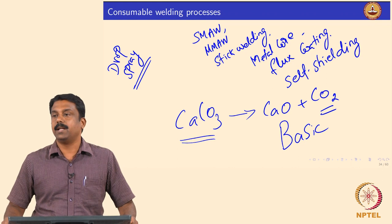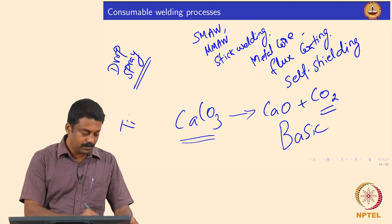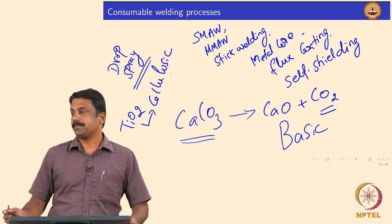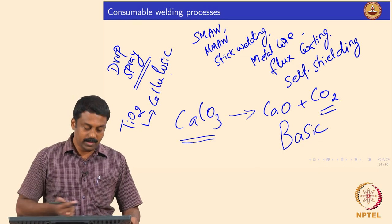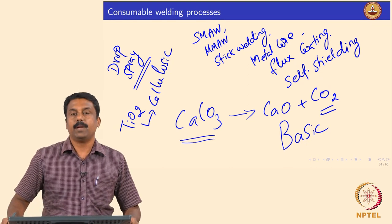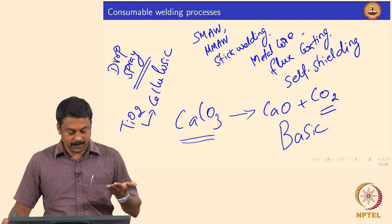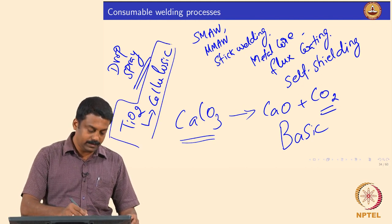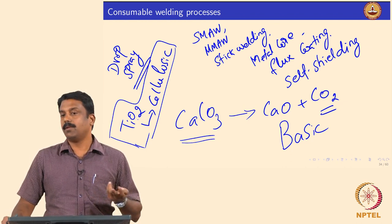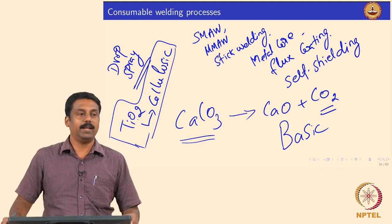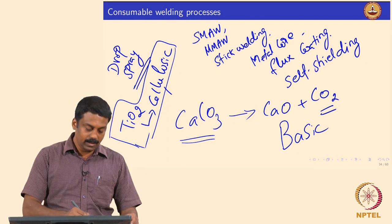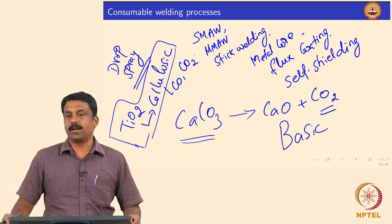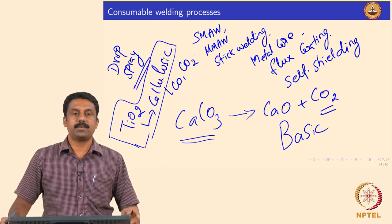You can also have flux made out of rutile and cellulosic material. Cellulosic material is made of wood particles and natural fibres. It can be added to either basic or rutile-based fluxes. Most commonly, cellulosic materials are added with rutile (titanium oxide) fluxes, because when cellulosic material burns it generates carbon dioxide and carbon monoxide — providing enough gas for arcing as well as shielding.